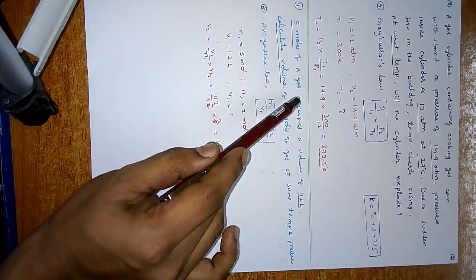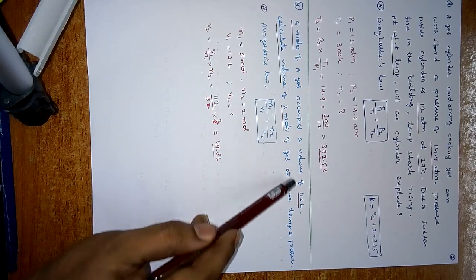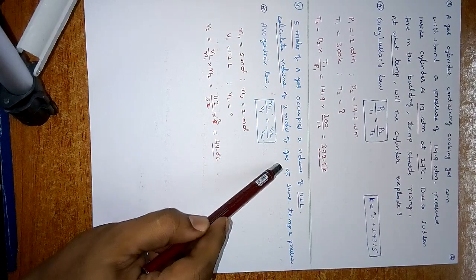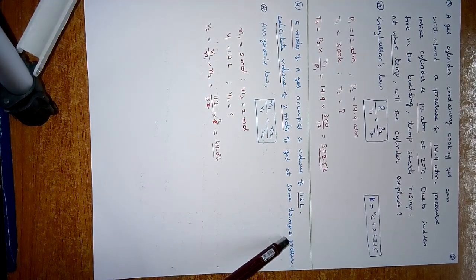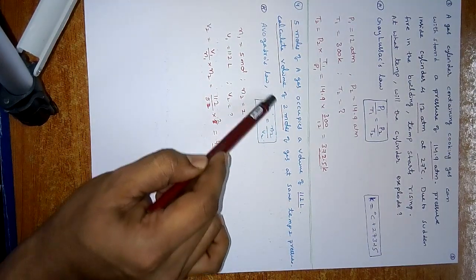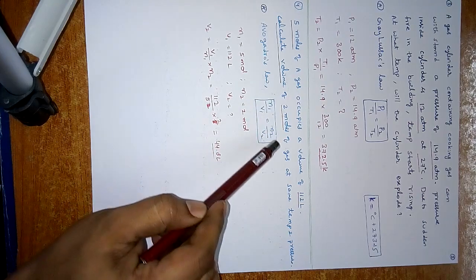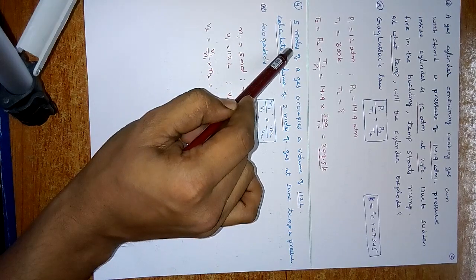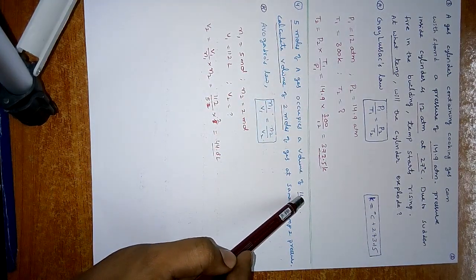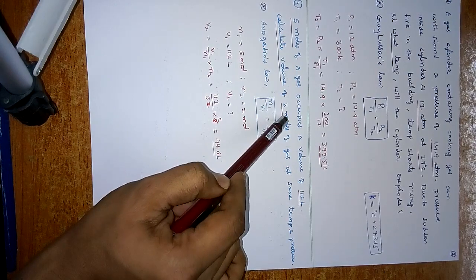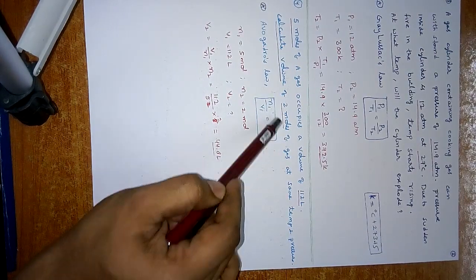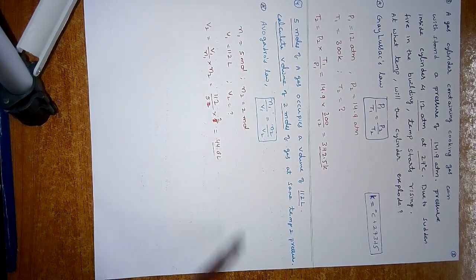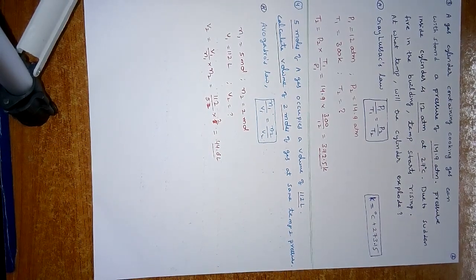5 moles of gas A occupies a volume of 112 litres. Calculate the volume of 2 moles of gas at the same temperature and pressure. Using Avogadro's law: N1/V1 = N2/V2. Here N1 = 5 moles, V1 = 112 litres, N2 = 2. So V2 = 44.8 litres.